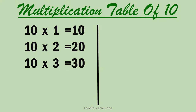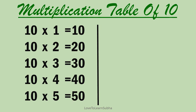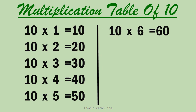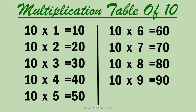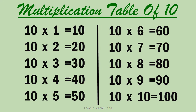Multiplication table of 10. 10 ones are 10, 10 twos are 20, 10 threes are 30, 10 fours are 40, 10 fives are 50, 10 sixes are 60, 10 sevens are 70, 10 eights are 80, 10 nines are 90, 10 tens are 100.